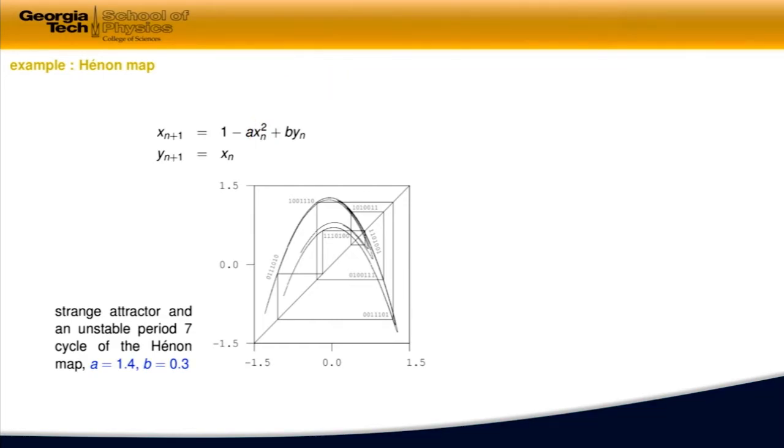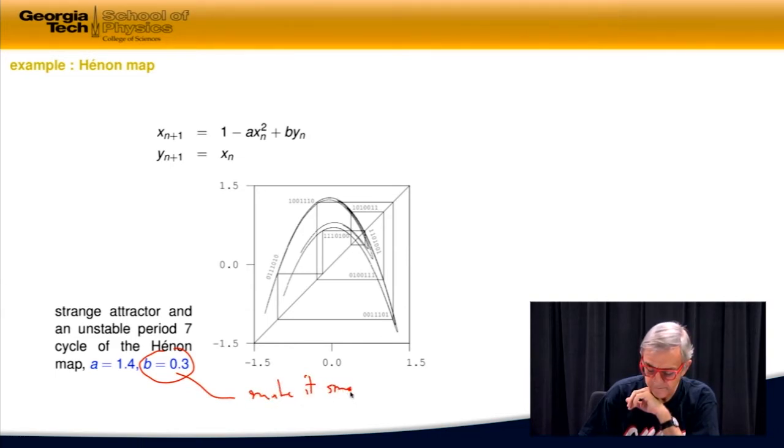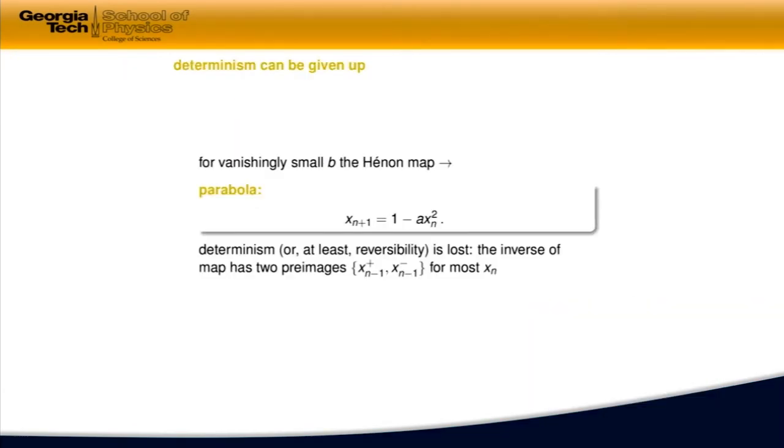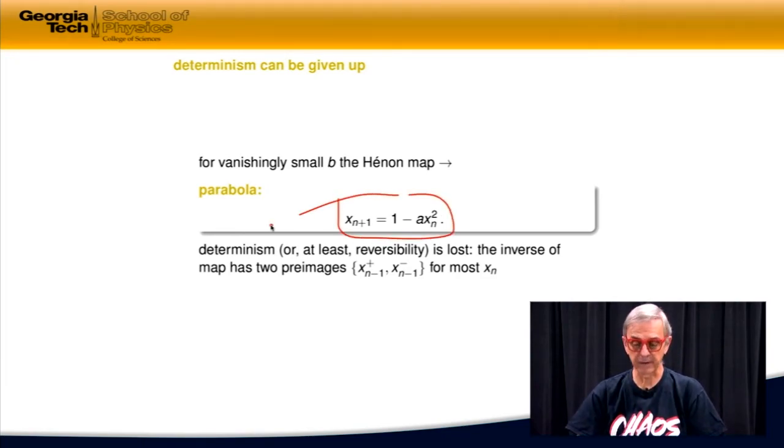Now, if this parameter b here is taken small, so make it small. Eventually, you realize that if b is taken very small, it doesn't contribute here. So y is just taken for a ride, and this is actually just quadratic map written on this page.